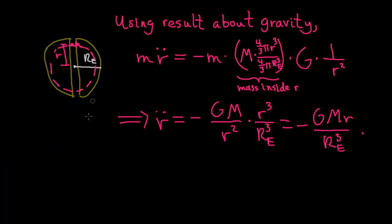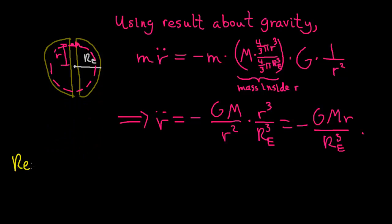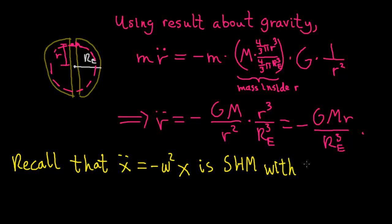But this is the form of simple harmonic motion, because we recall, maybe I should use something other than pink, maybe I'll use yellow. So recall that simple harmonic motion, something like ẍ = -ω²x, is simple harmonic motion with frequency ω. So this is of the form of simple harmonic motion, where the frequency is ω = √(GM/R_E³).